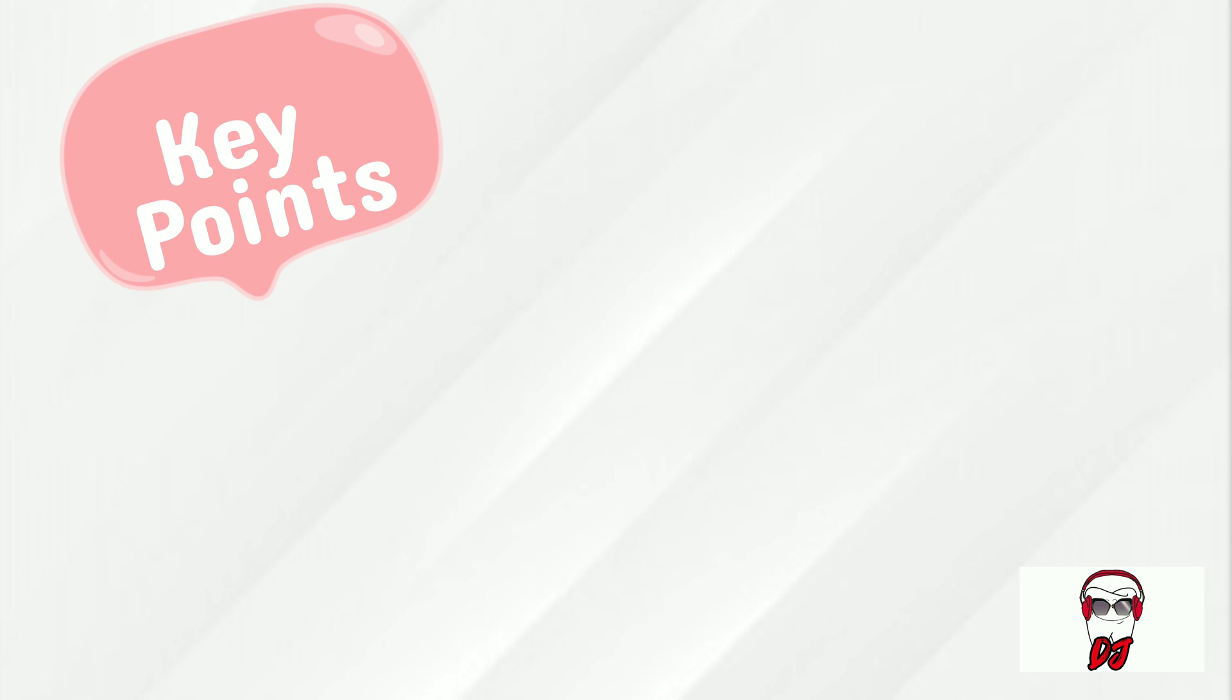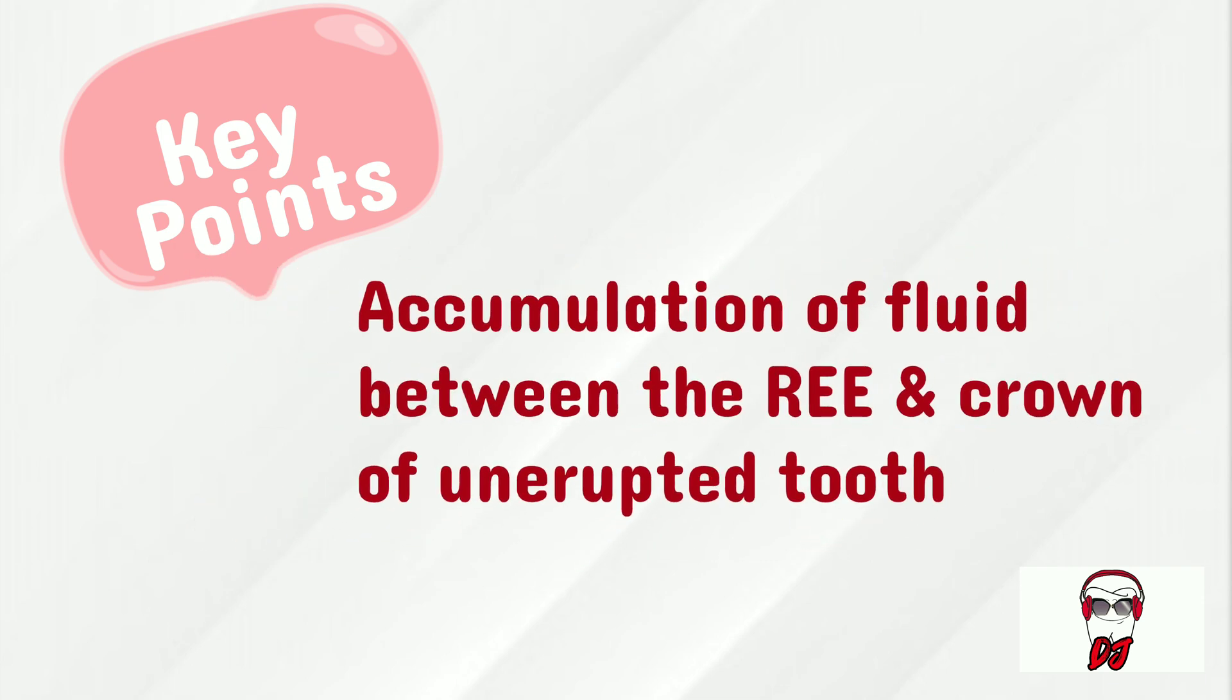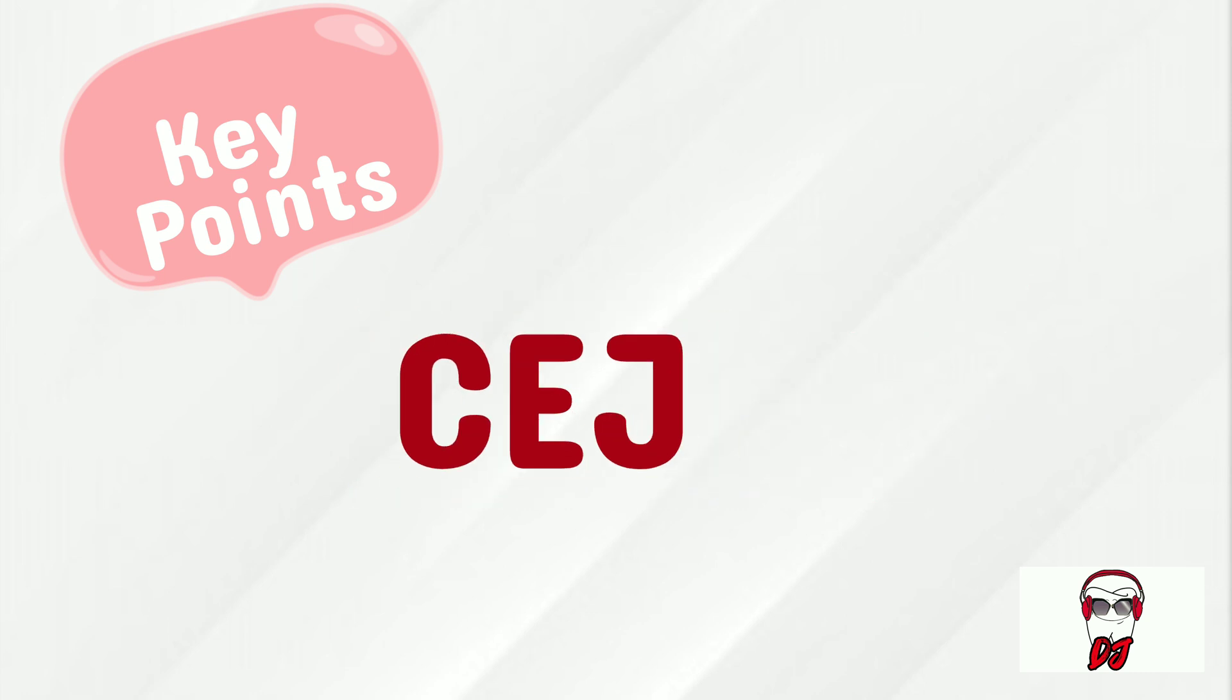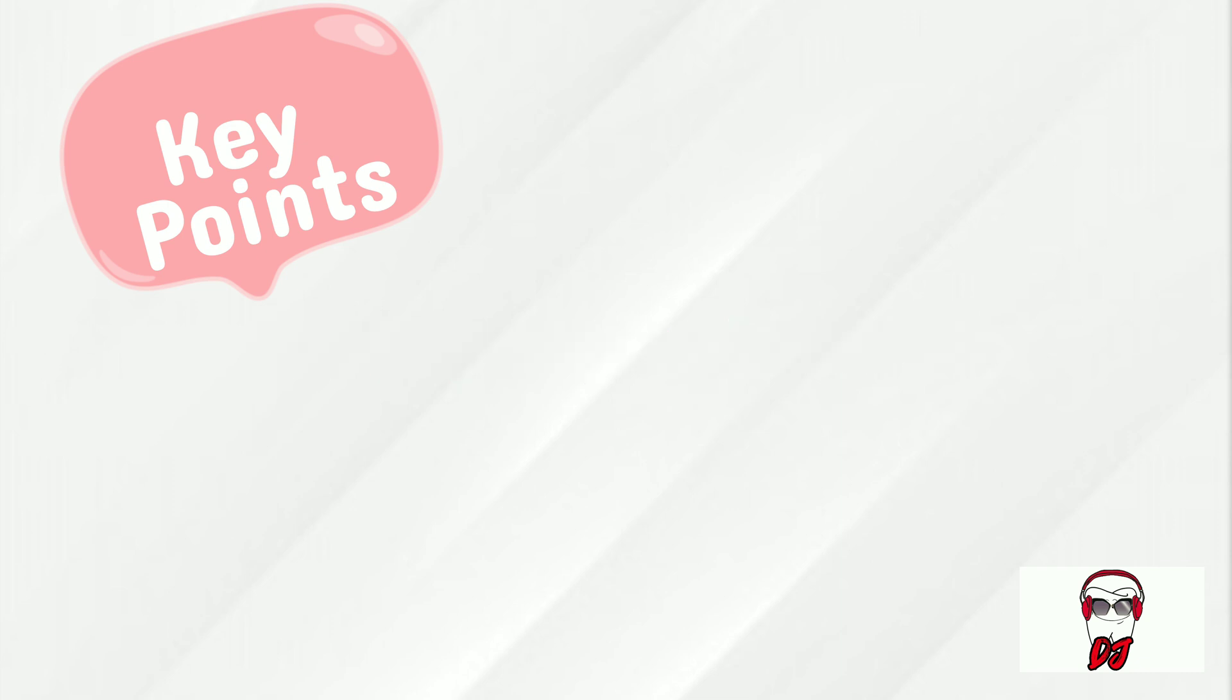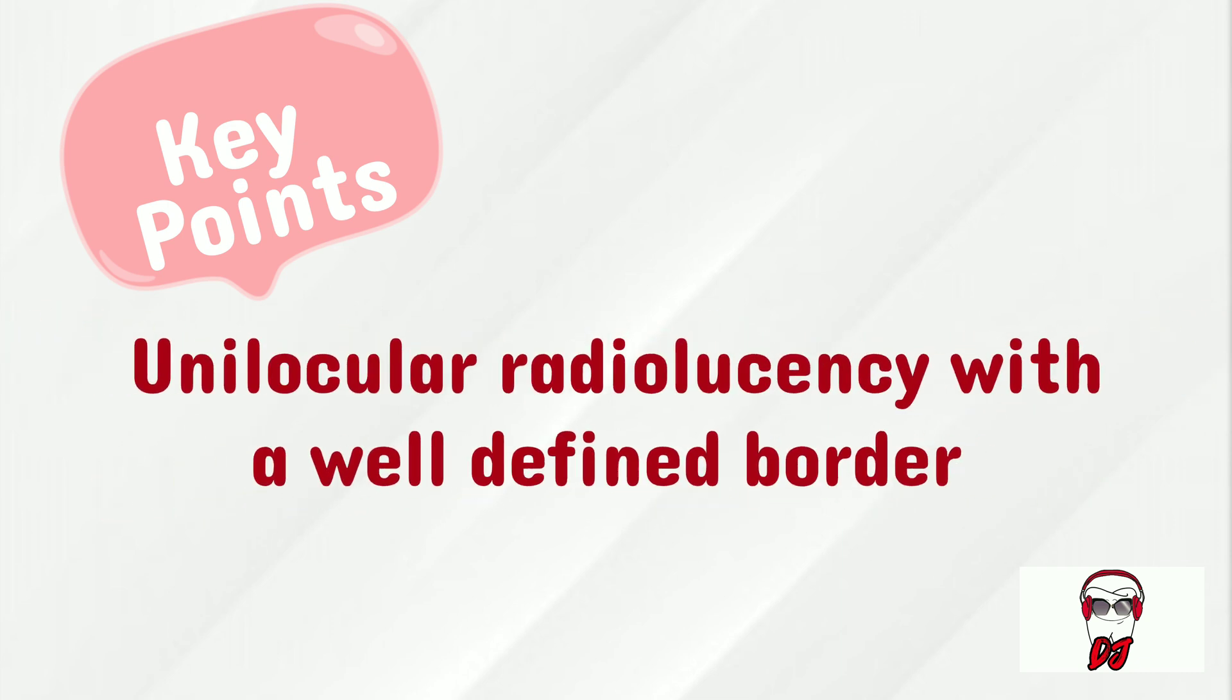So let's summarize with some key points. A dentigerous cyst is the accumulation of fluid between the reduced enamel epithelium and the crown of an unerupted tooth, which occurs at the cementoenamel junction. I'm usually asymptomatic. And radiographically, you will notice a unilocular radiolucency with a well-defined border.